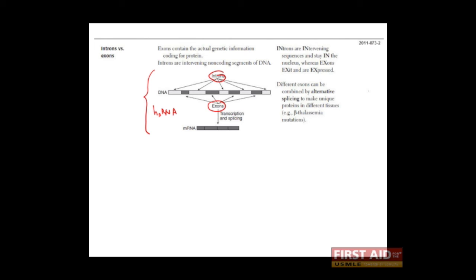After 5' capping, the addition of the polyadenylate tail, and the removal of introns, we get an mRNA transcript, which is allowed to exit the nucleus and be translated into protein.